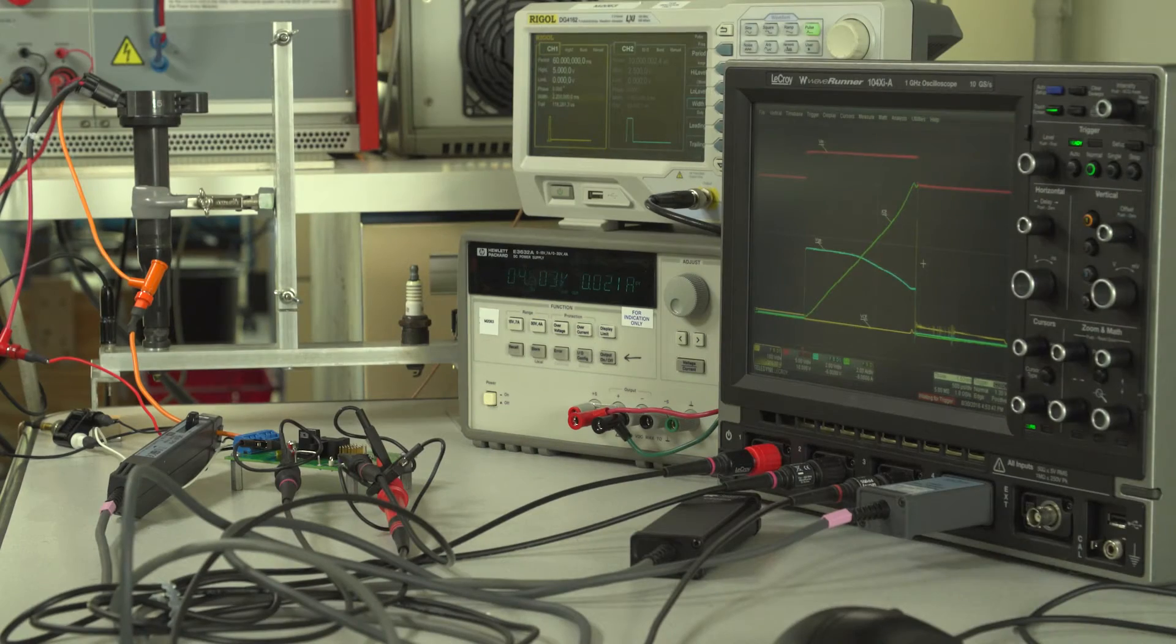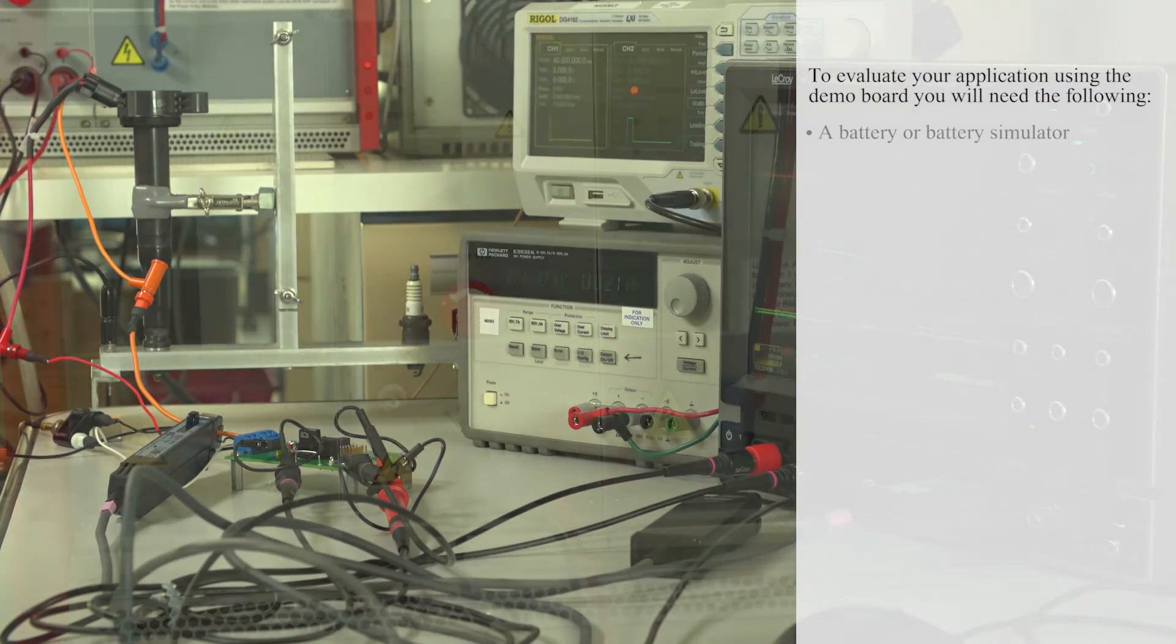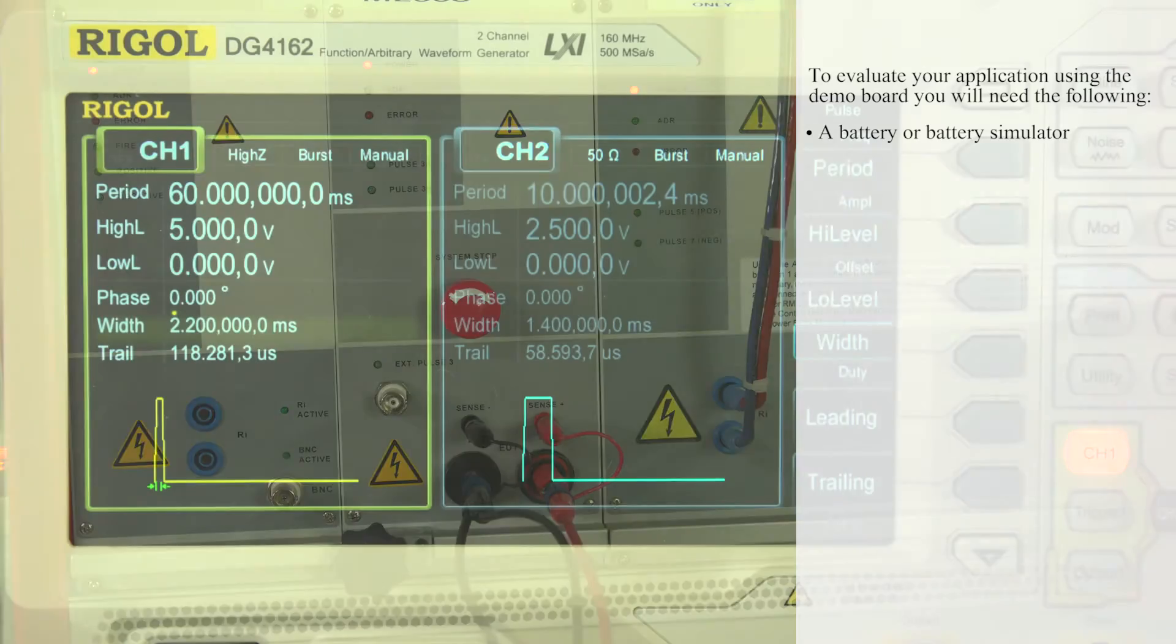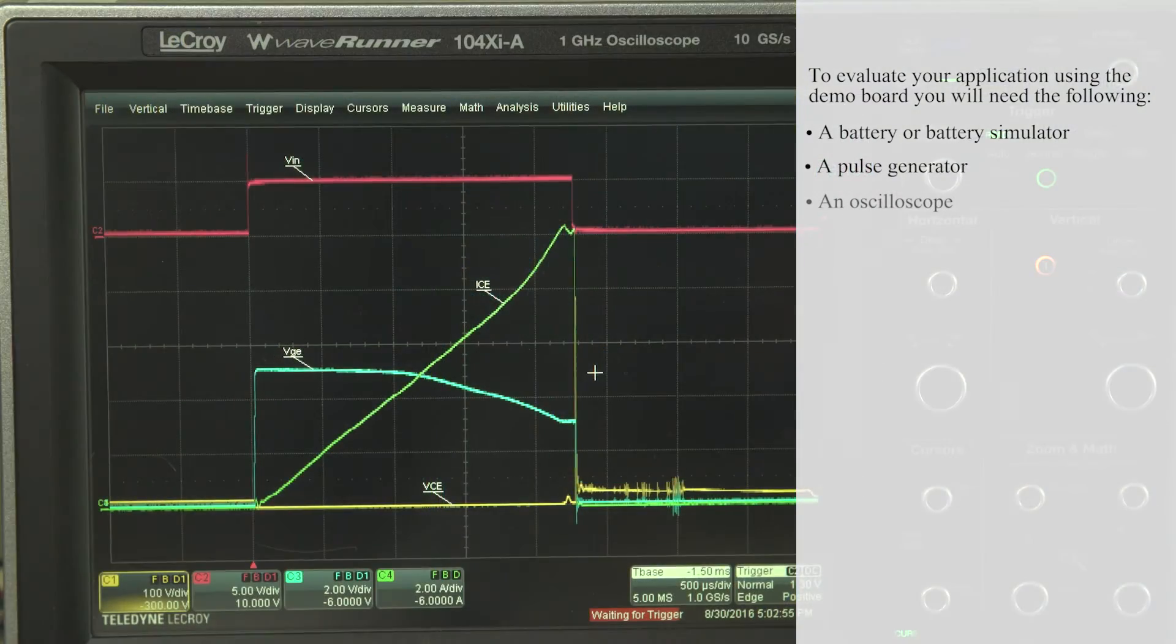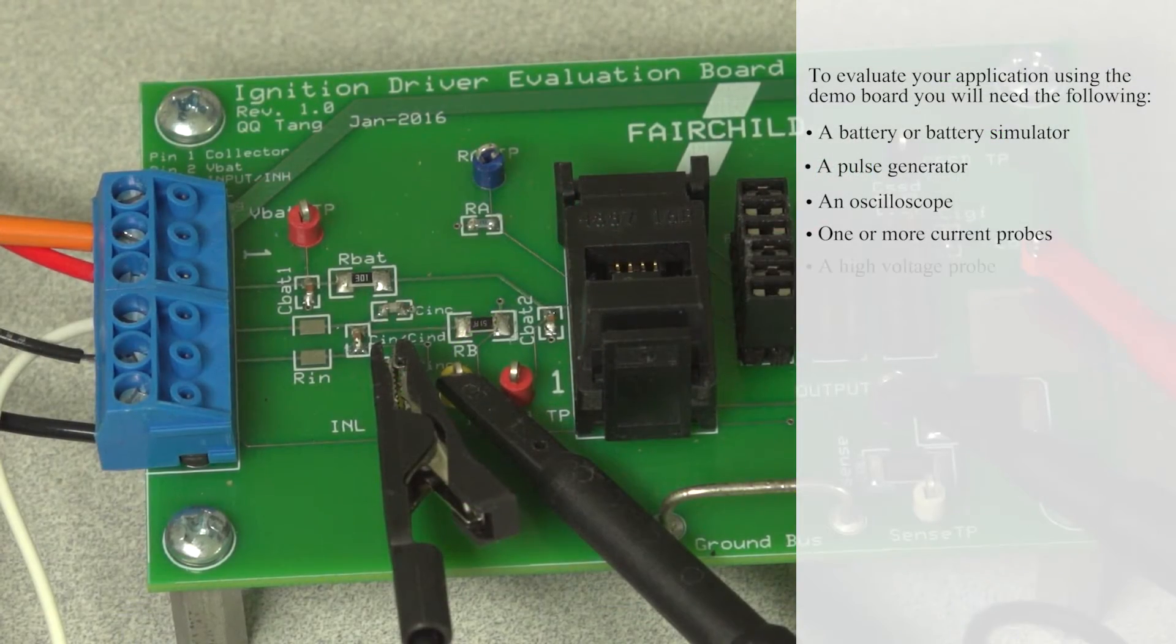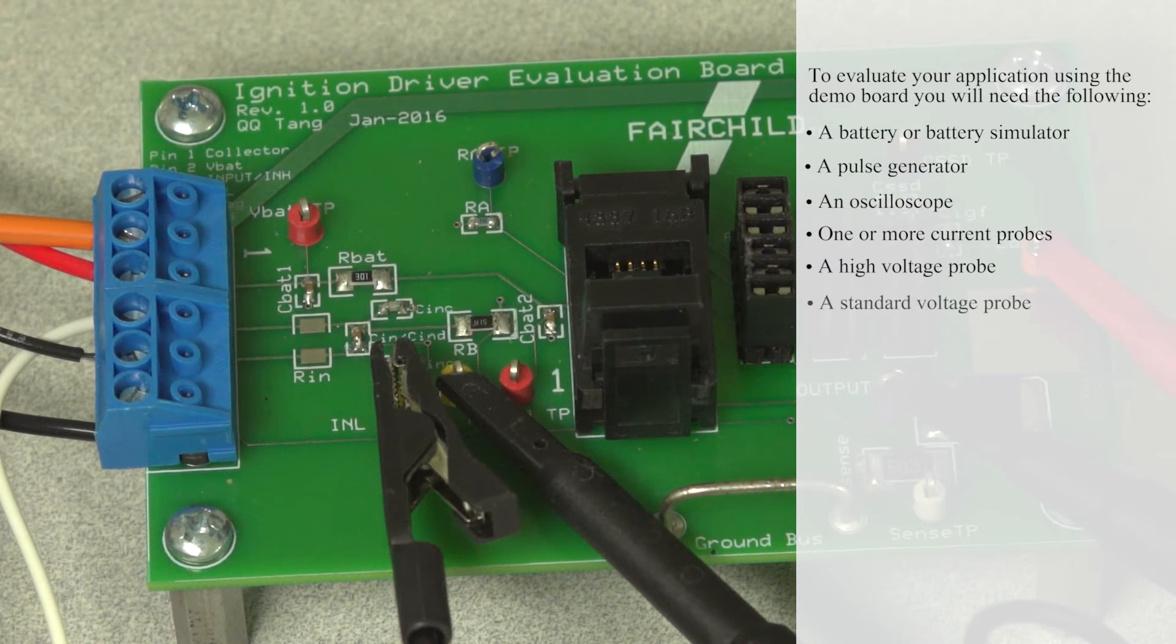To evaluate your application using the demo board you will need the following: a battery or battery simulator, a pulse generator, an oscilloscope, one or more current probes, a high voltage probe, and a standard voltage probe.